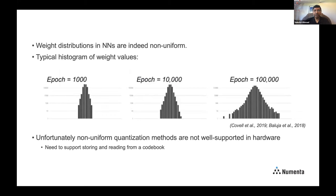These figures from Michelle Covell's and Beluja's paper show the histogram of weight values — I think in MNIST, but this applies to many neural networks. The x-axis is different buckets of weight values and the y-axis is frequency. It's pretty non-uniform and the distribution changes as a function of training. It looks Gaussian in the pictures but it's closer to a Laplacian distribution. Unfortunately, non-uniform quantization methods are not well supported in hardware — you need to store a codebook that can be completely different for different layers, and hardware architectures don't always have good support for that.